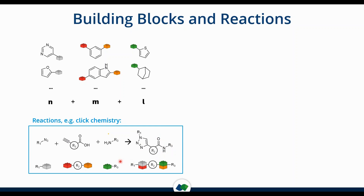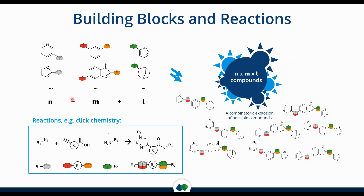If you translate this stacking of building blocks together to get functionalities connecting the scaffolds, you get compounds. The beauty of this approach is that it's not additive — you don't get a sum where n plus m plus l equals the number of building blocks, but you multiply them, getting a combinatorial explosion of possible compounds. So if you have 10, 10, and 10 building blocks, you end up with 1,000 possible compounds.